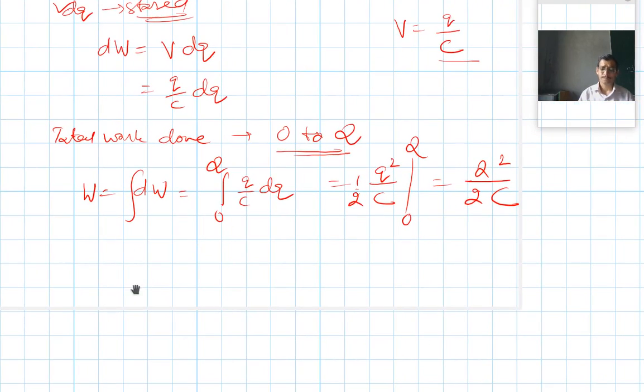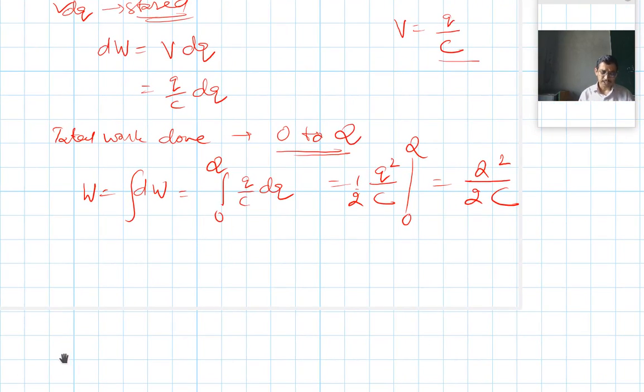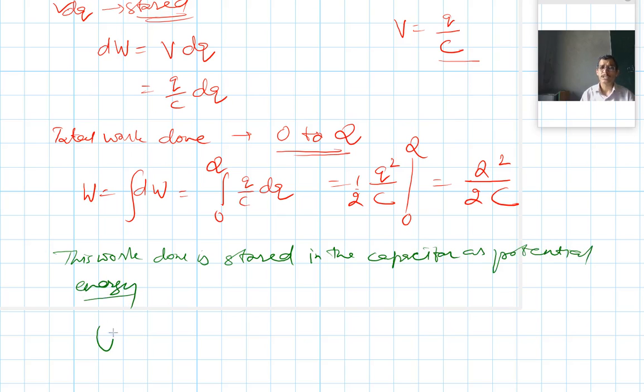Now this work done is stored in the capacitor as potential energy. Therefore, energy stored in the capacitor is given by U = (1/2) Q²/C.